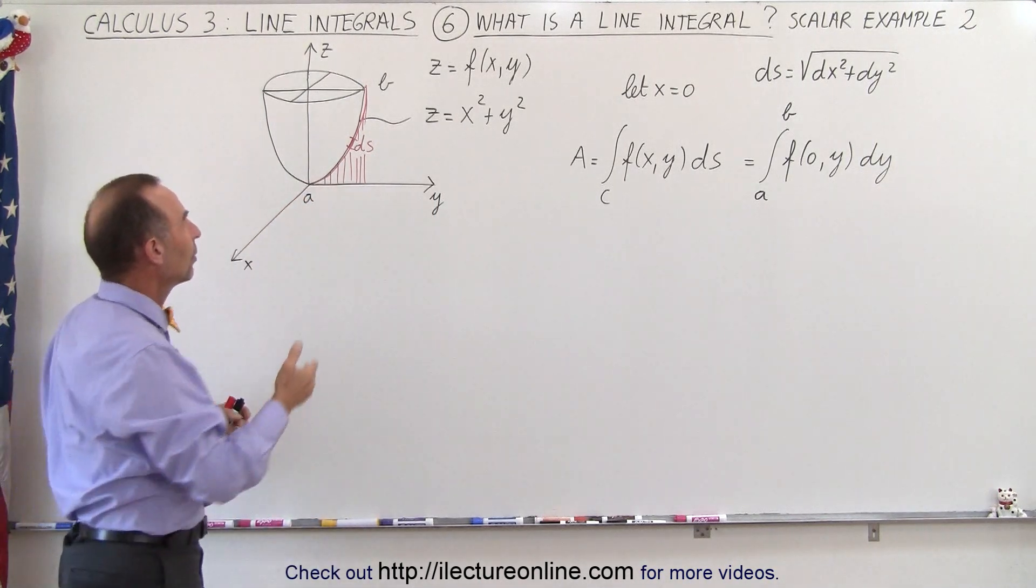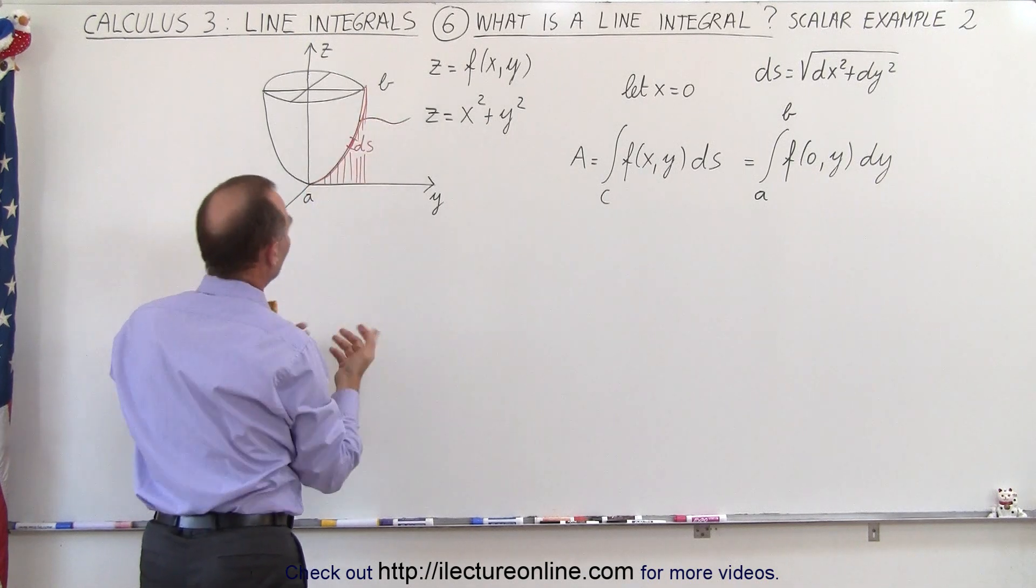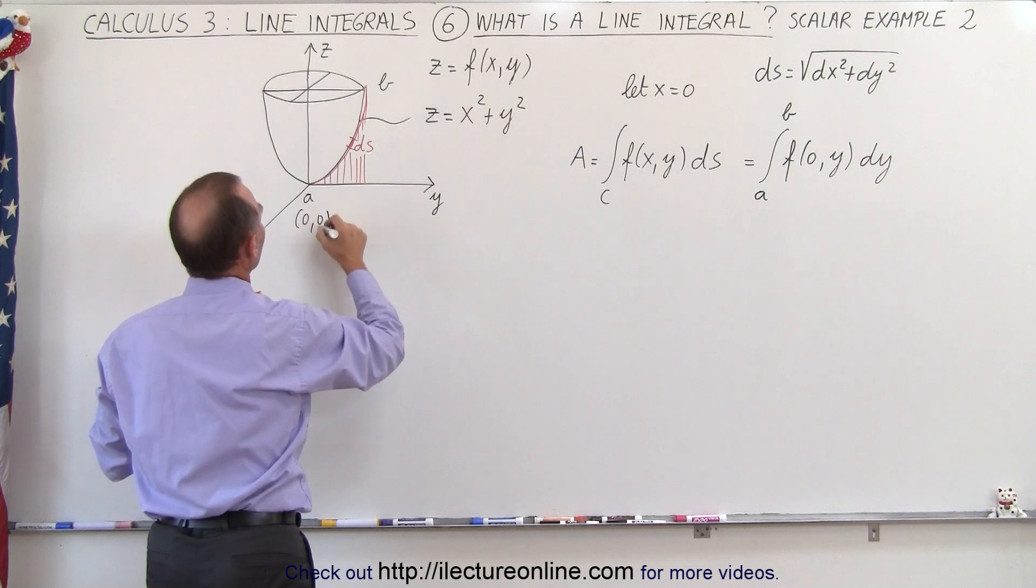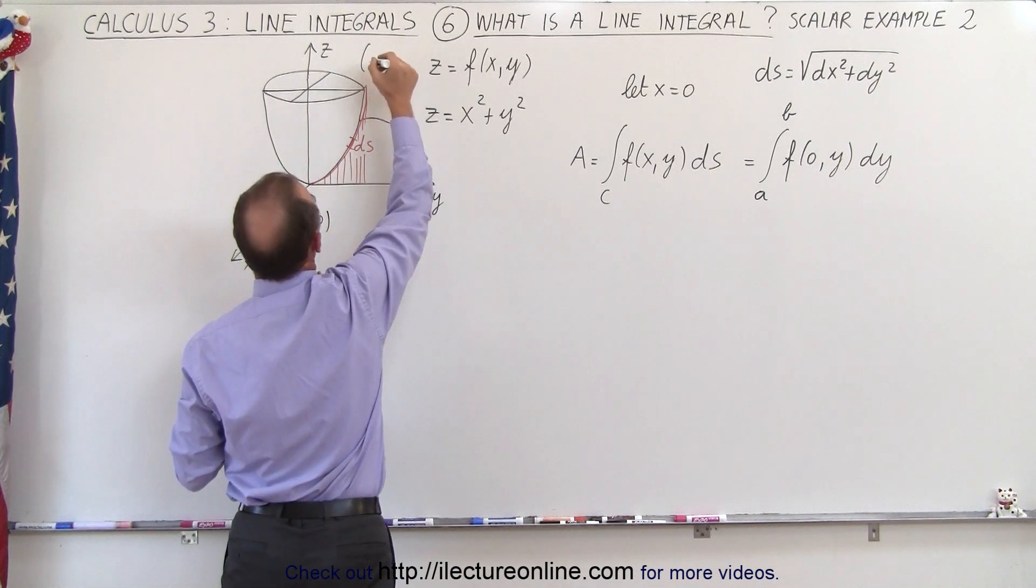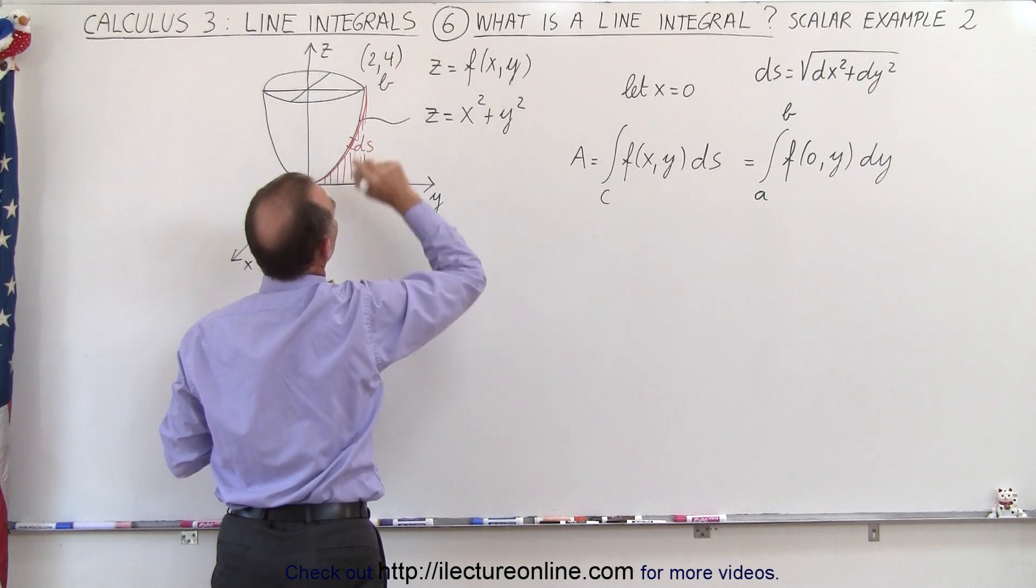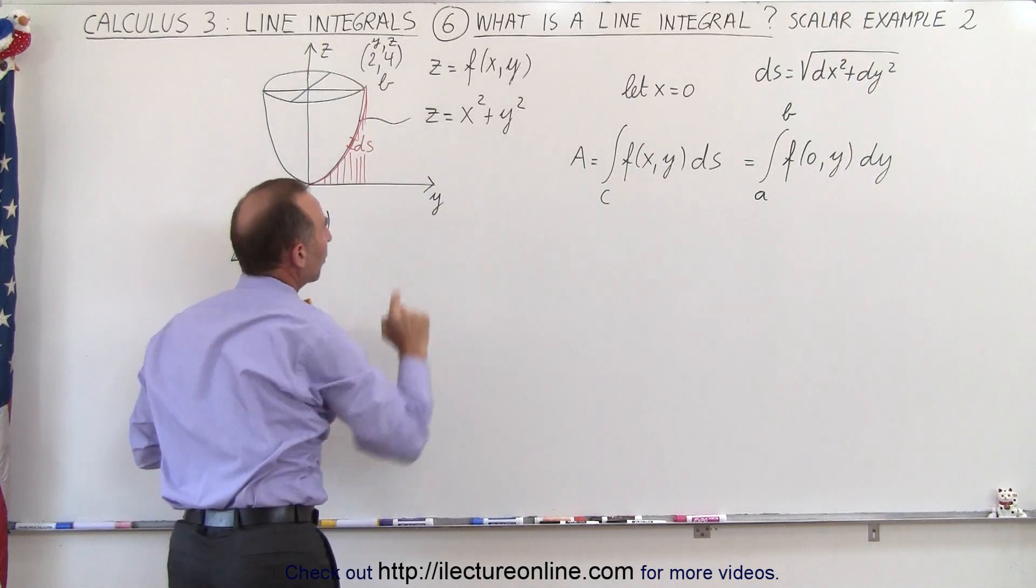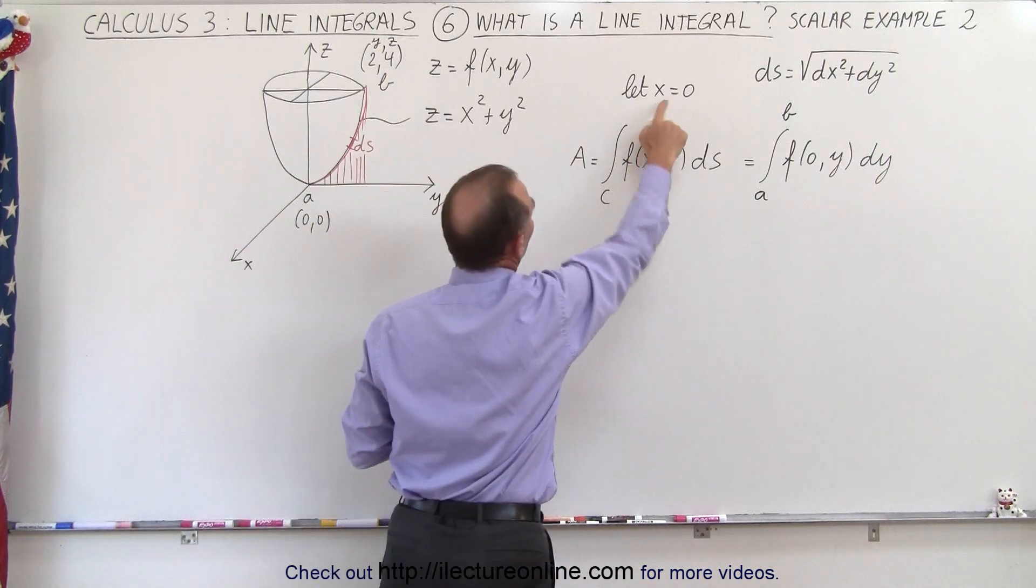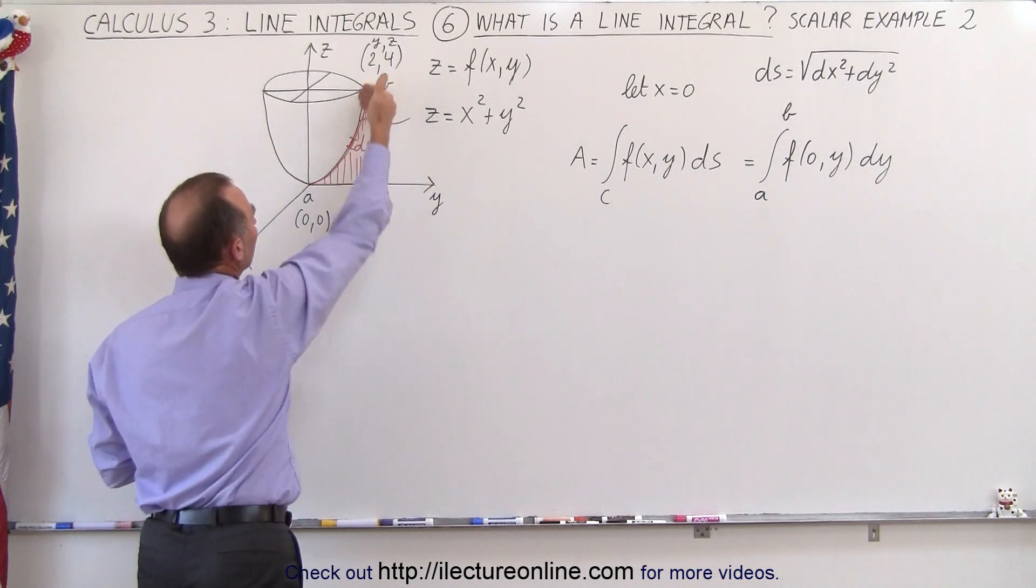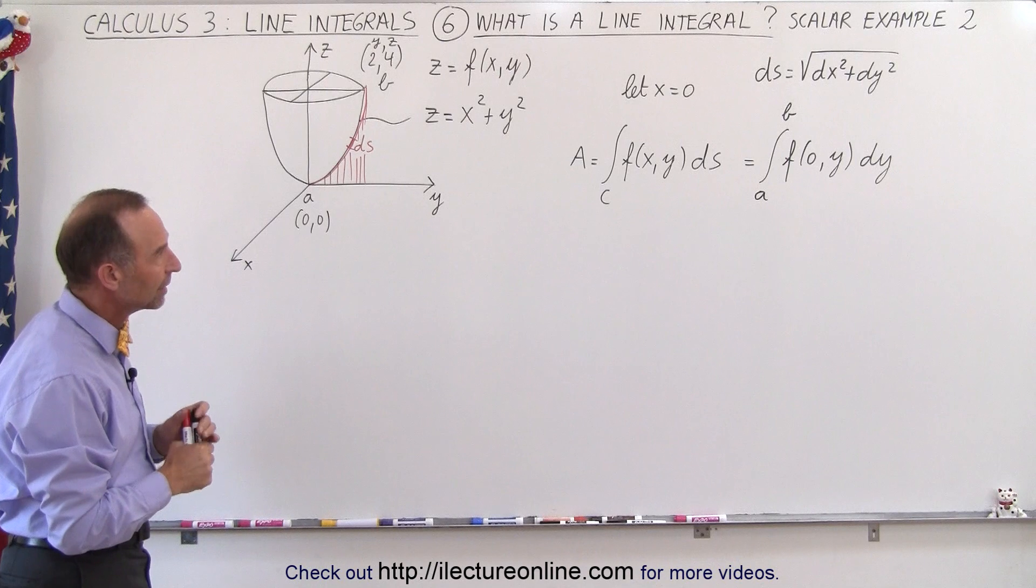To find what the line integral will be going from a to b, let's say that a is at (0,0) and b is at (2,4). This would be the y value and this would be the z value, because what we're going to do is let x equal 0. We're going to integrate along the edge here so that x will always be 0 along that path, again to make things a little bit easier.